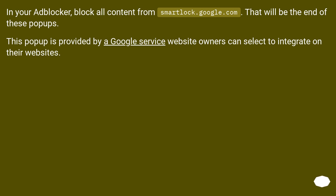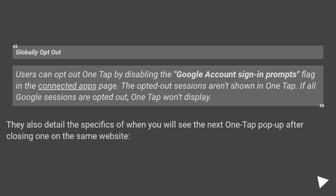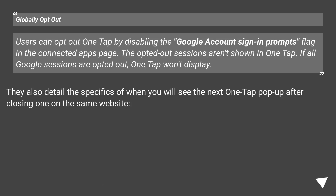This pop-up is provided by a Google service that website owners can select to integrate on their websites. Google now tells us exactly how to opt out of OneTap alerts. Under 'Globally opt-out': users can opt out of OneTap by disabling the Google account sign-in prompts from the Google flag in the Connected Apps page. The opted-out sessions aren't shown in OneTap; if all Google sessions are opted out, OneTap won't display. Google also details the specifics of when you will see the next OneTap pop-up after closing one on the same website.